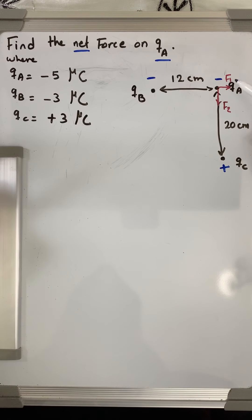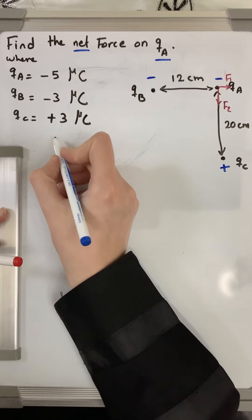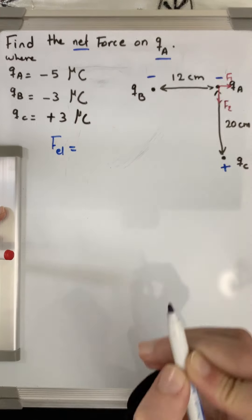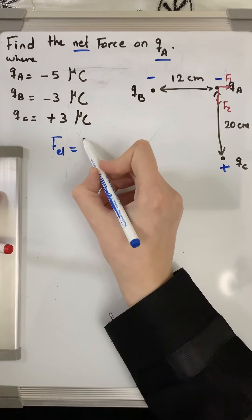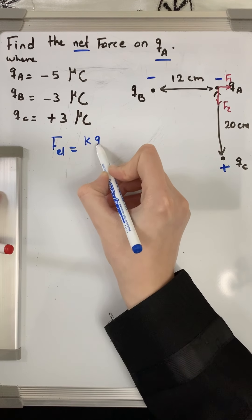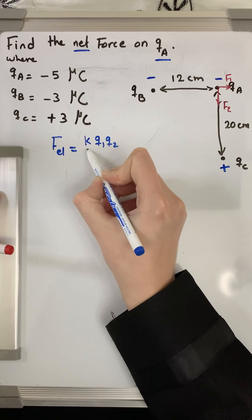F electric in general: to find the electric force on any charge, you need to apply Coulomb's Law which says k times q1 times q2 divided by r squared.